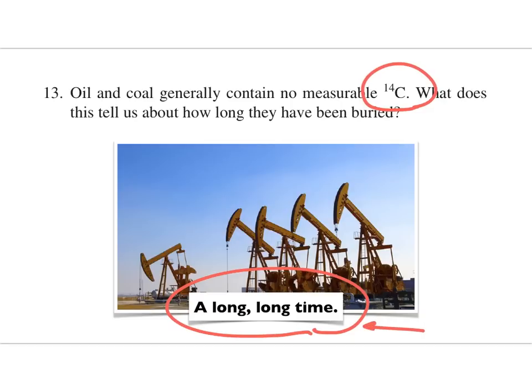So oil and coal have been underground for a long, long time. We know that they're produced from plants — when the plants were growing, there was a lot of carbon-14 — but then they got buried. That's why they're called fossil fuels. They've been down there for a long time, changing their chemical form. Now there's no carbon-14; they've been down there a long time.